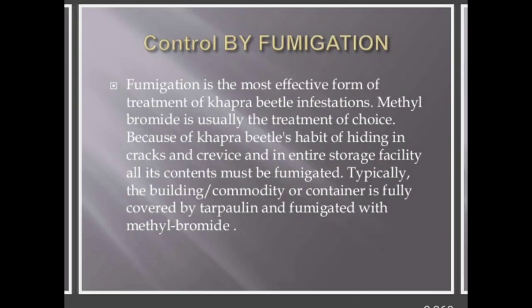Fumigation is the most effective form of treatment for the Khapra beetle and most other pests. Methyl bromide is usually used in this treatment. Because of the Khapra beetle's habit of hiding in cracks and crevices, the entire storage facility and all its contents must be fumigated.